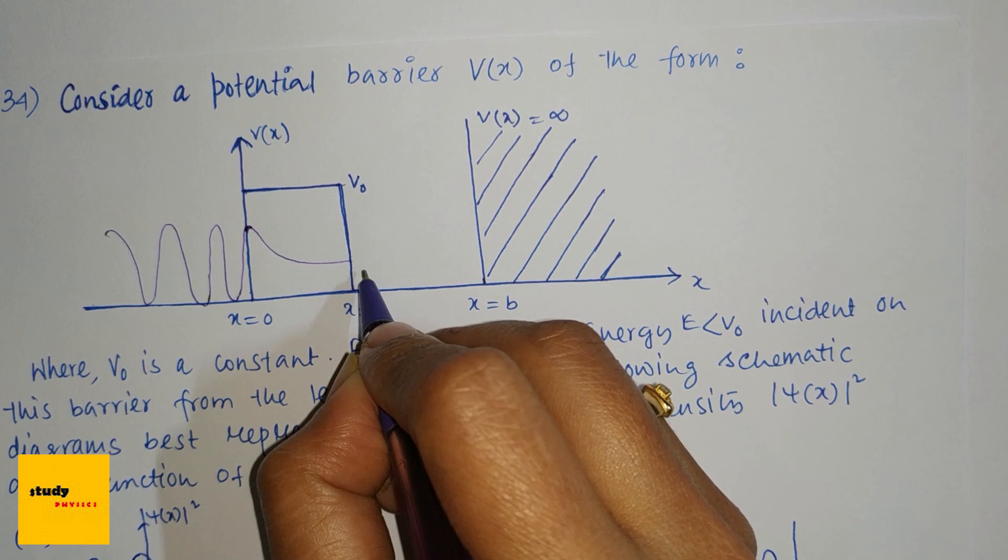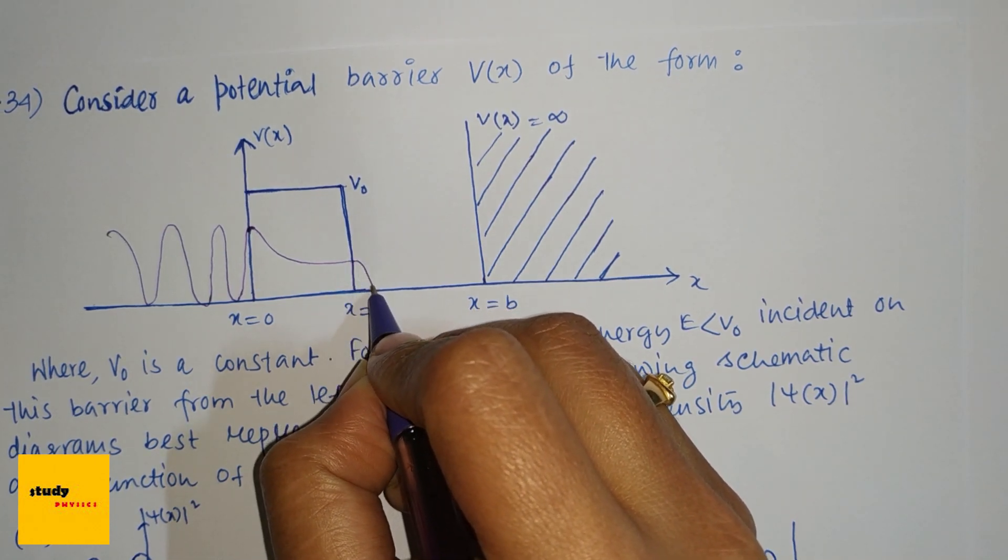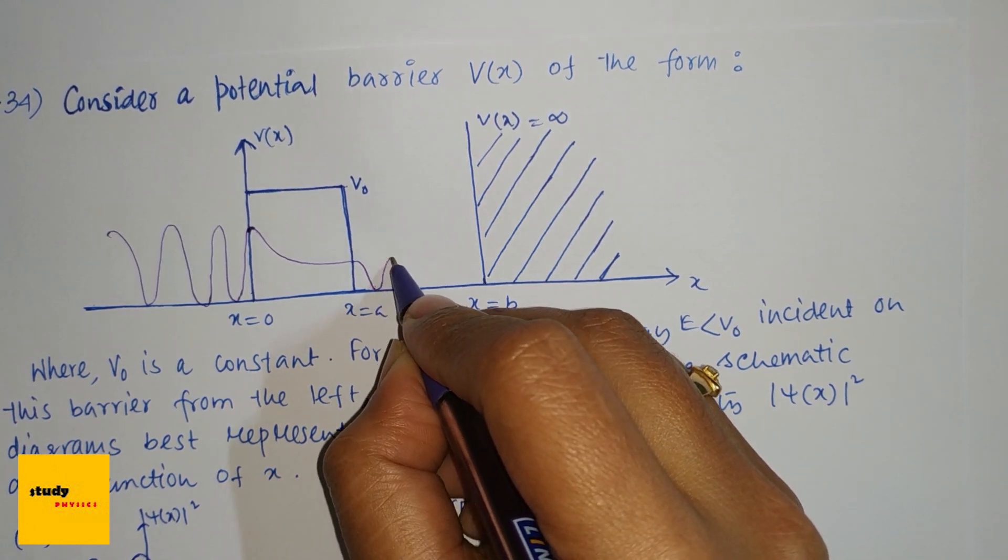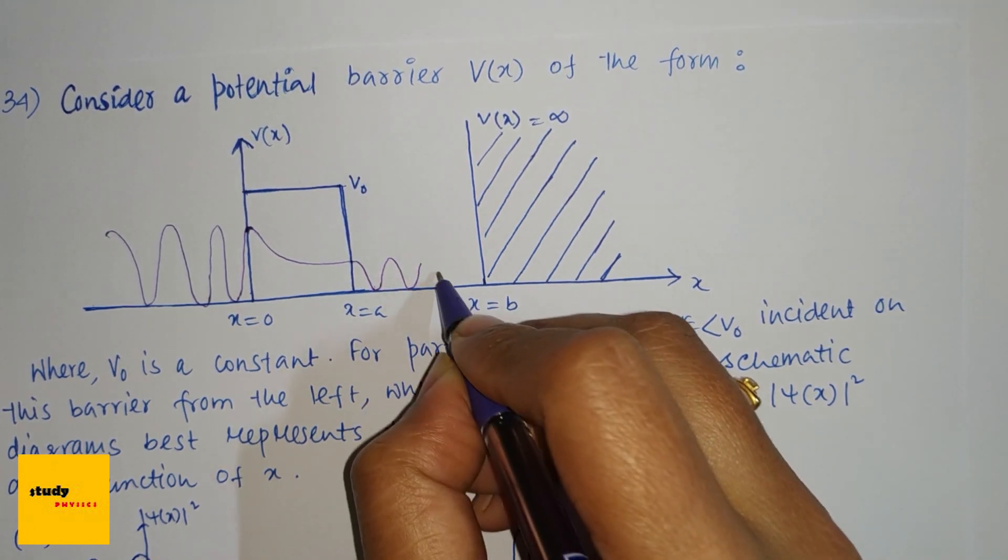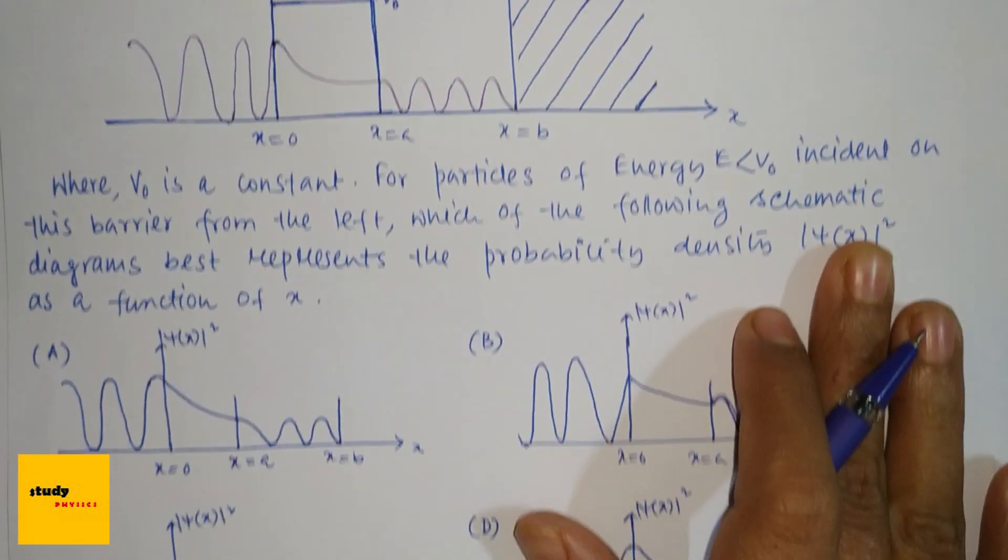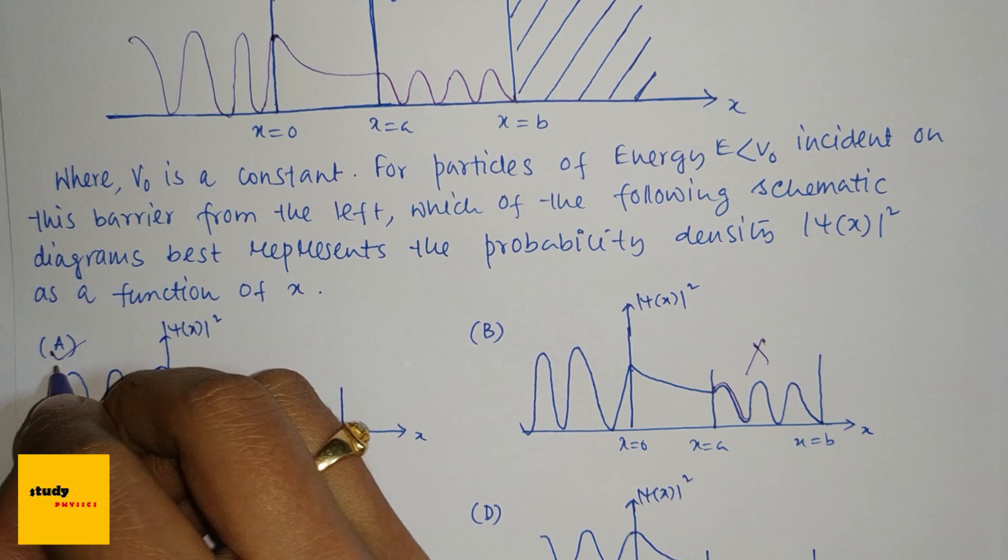So here, the probability density will decrease like this, and the particle oscillates, so the curve is just like our first region, like this. So the first option is correct.